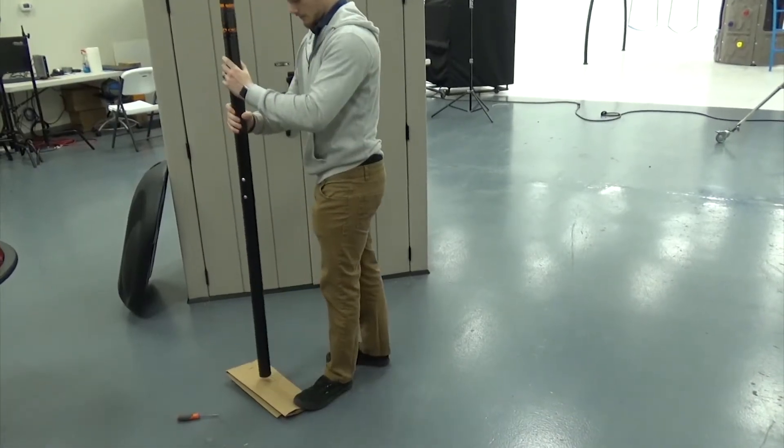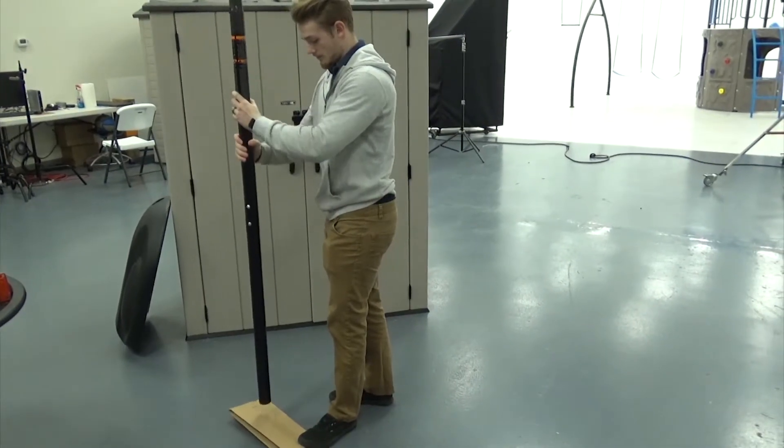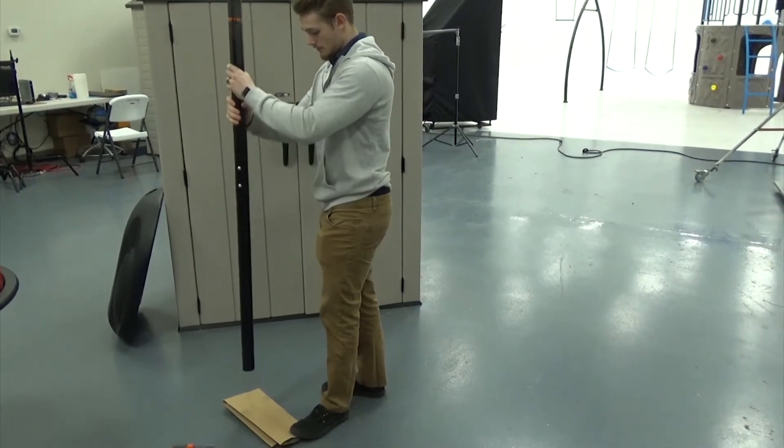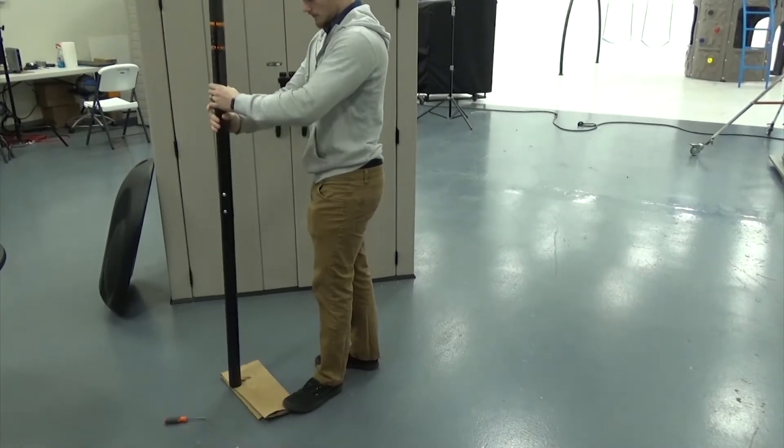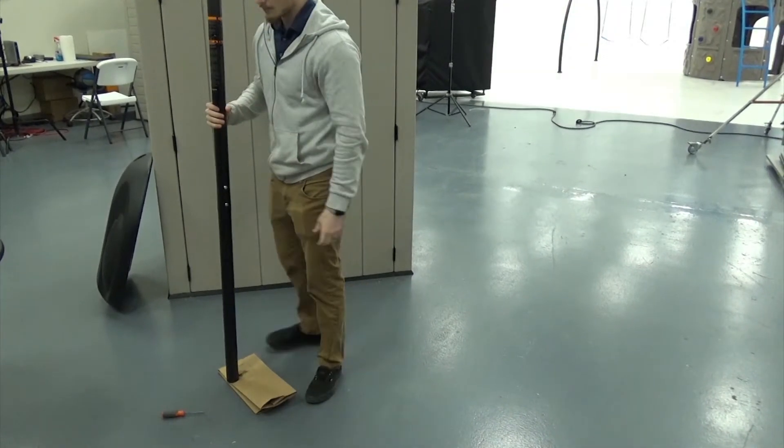Forcefully strike the bottom pole on a piece of wood or cardboard five to six times to seat the bottom pole to the middle pole. Make sure the slot on the bottom pole is completely covered before continuing the assembly. Please note, this step cannot be reversed, so make sure the pole is oriented correctly before seating the poles together.